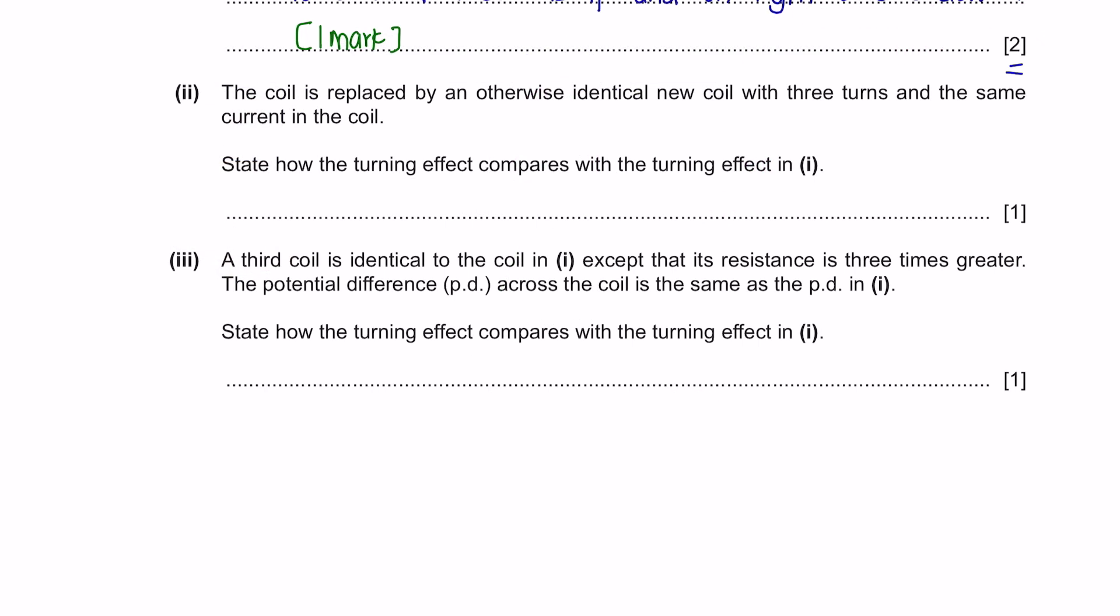Part 2. The coil is replaced by an otherwise identical new coil with three turns and the same current in the coil. State how the turning effect compares with the turning effect in part 1. The turning effect depends on several factors: the current flow, its magnetic field, and the number of turns of coil. To produce a stronger turning effect, we can increase the current, use a stronger magnet, or increase the number of turns of coil.